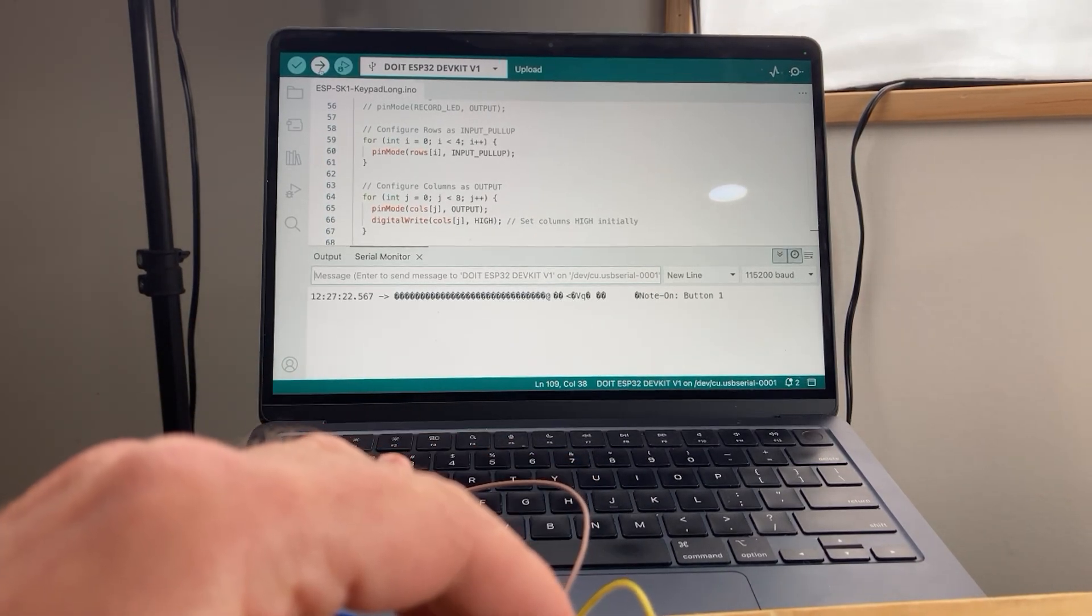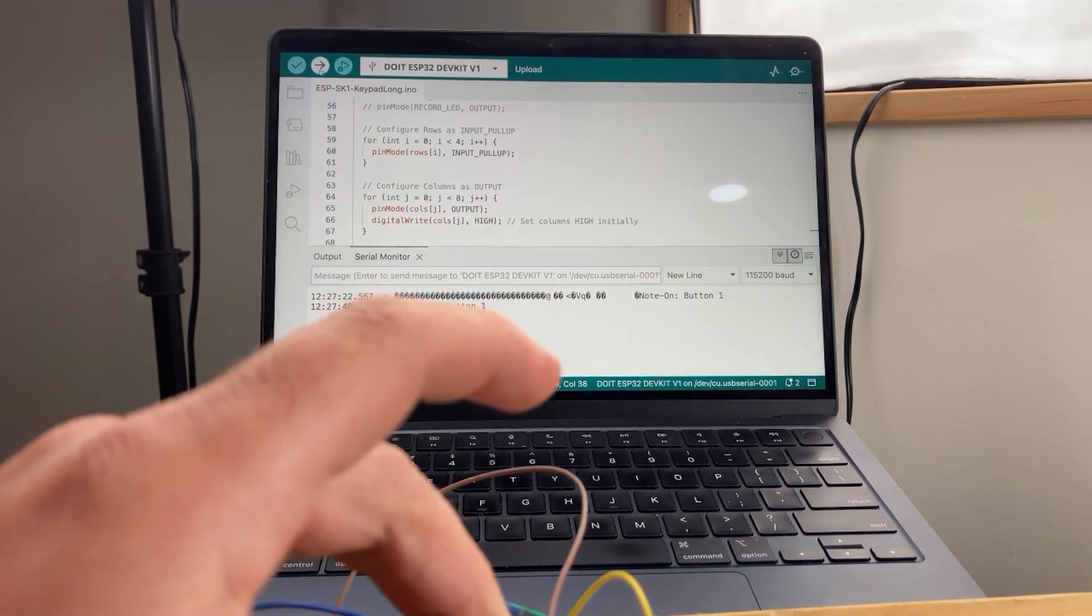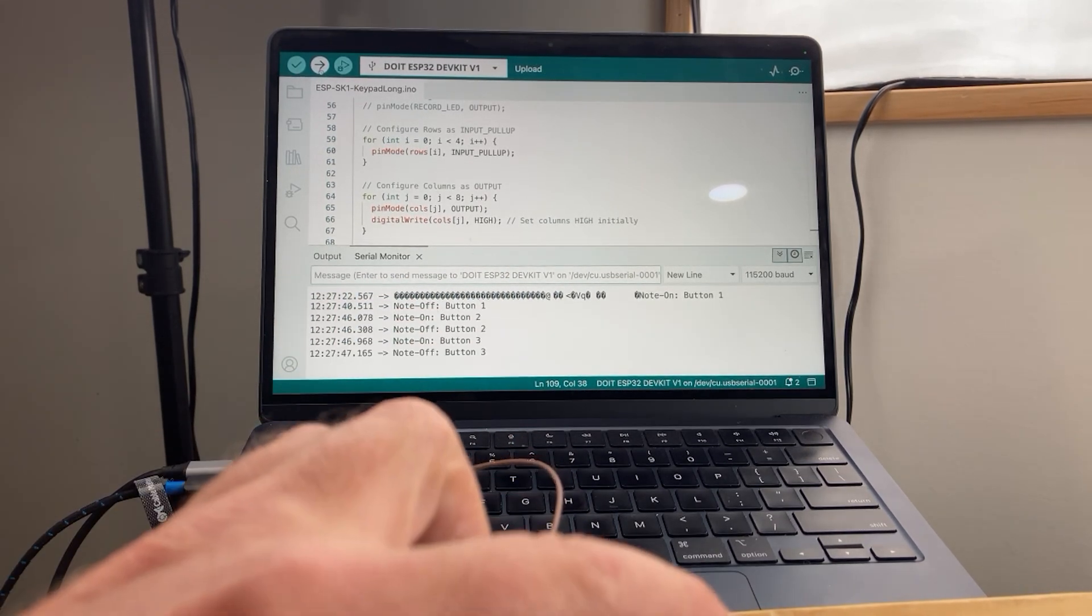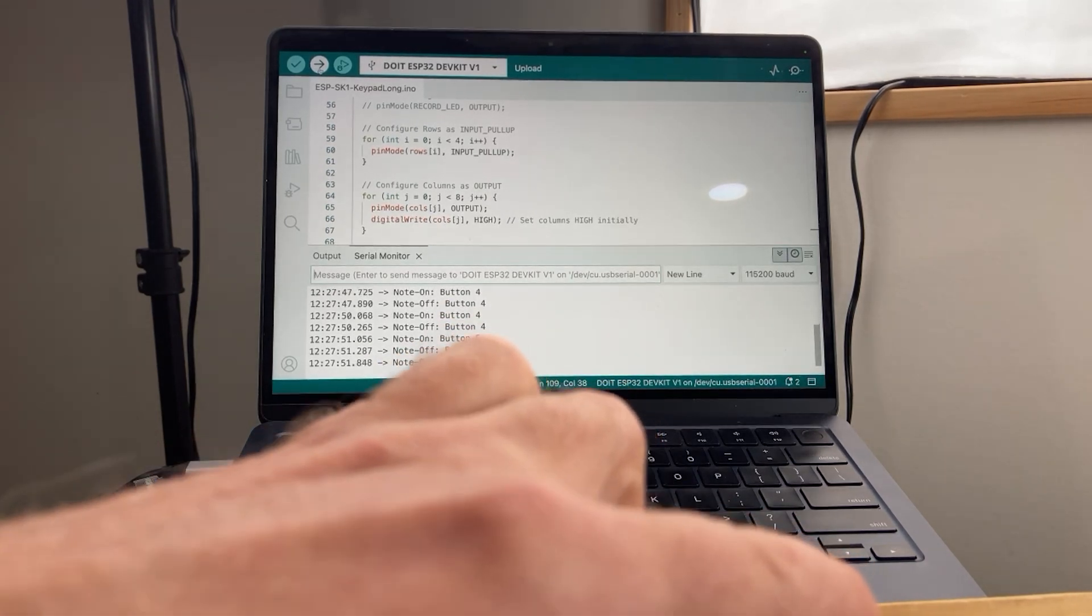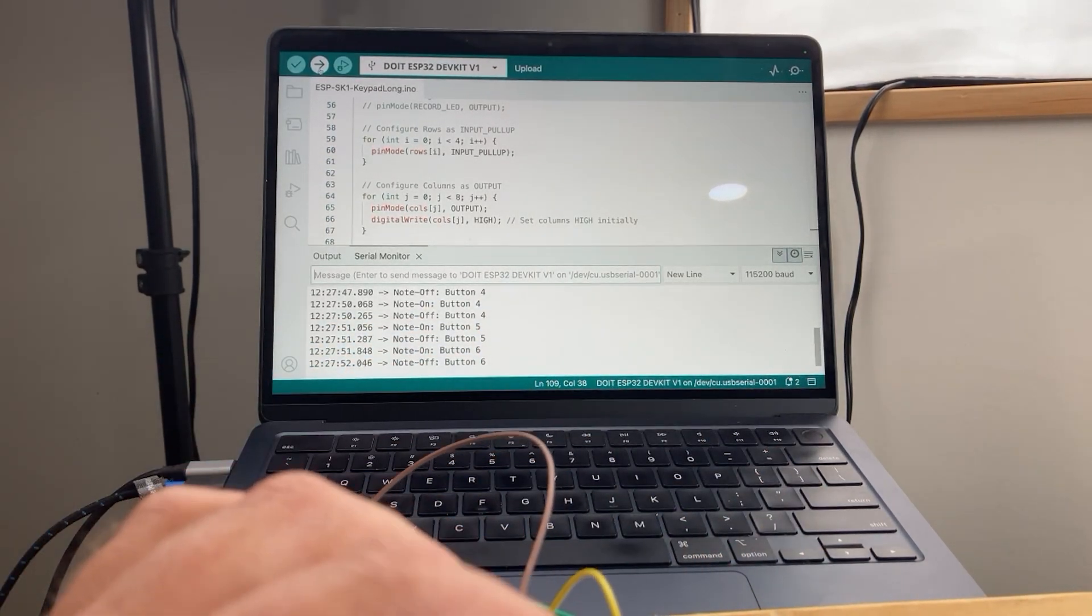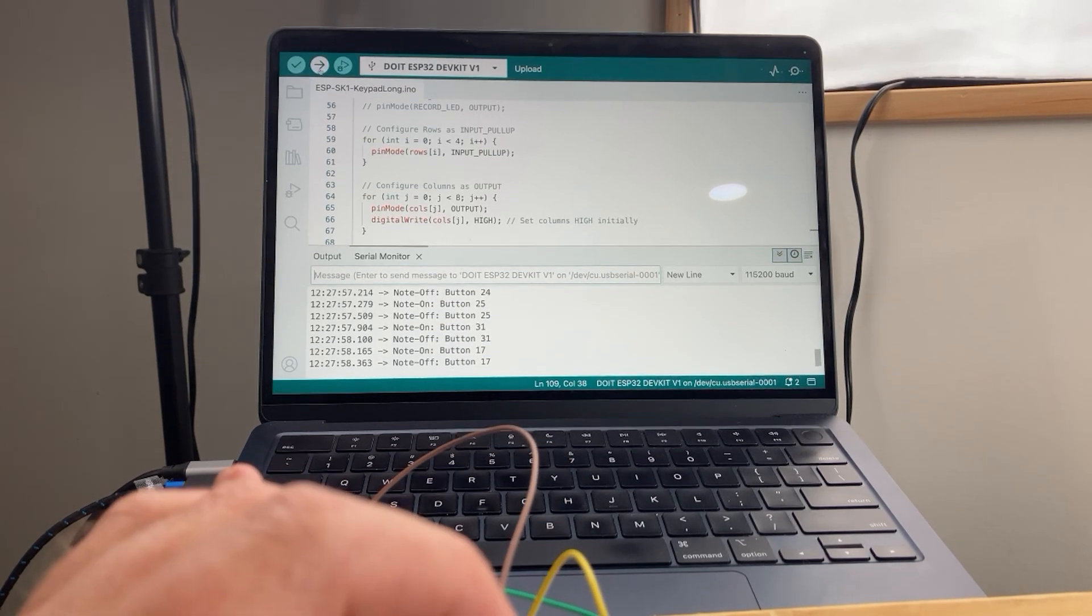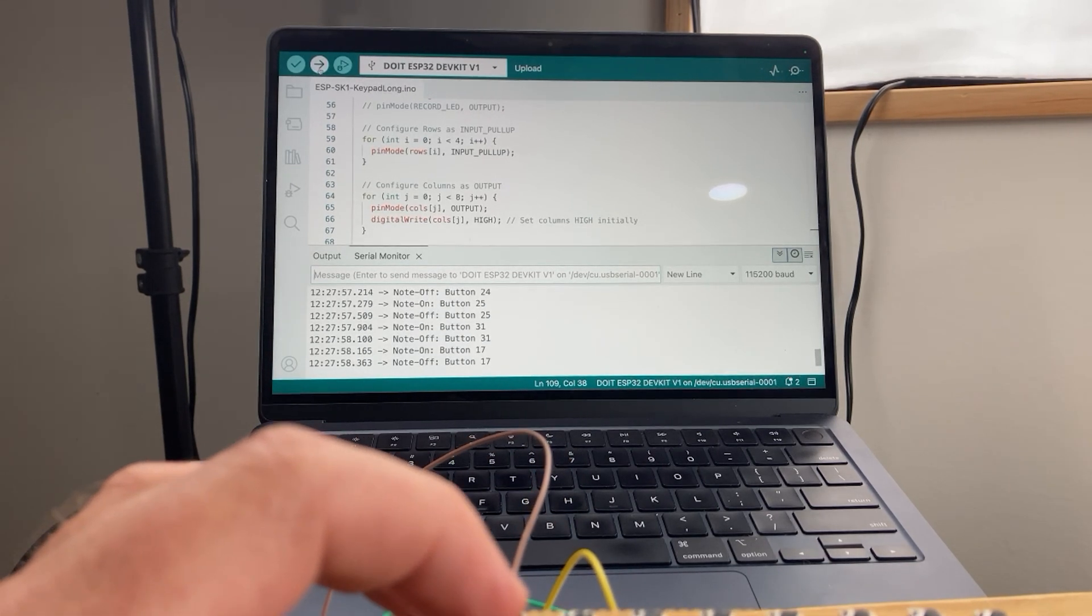The serial monitor says note on button one. And I'm going to release the button now. Note off button one. Excellent. And if we go through, we get that for every single button. Four, five, six, all the way up to 31, 32, and everything in between. The keypad is working as we expect.